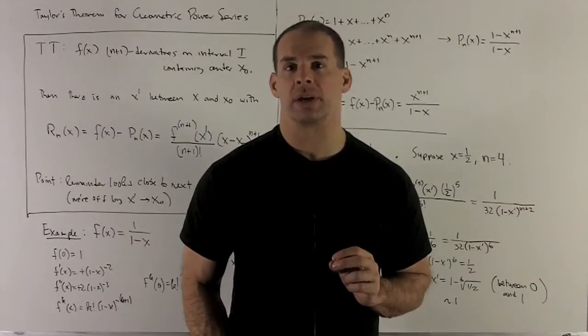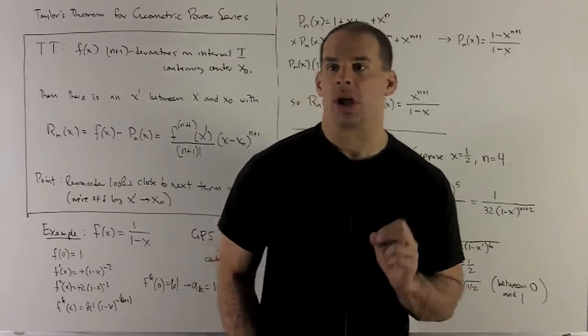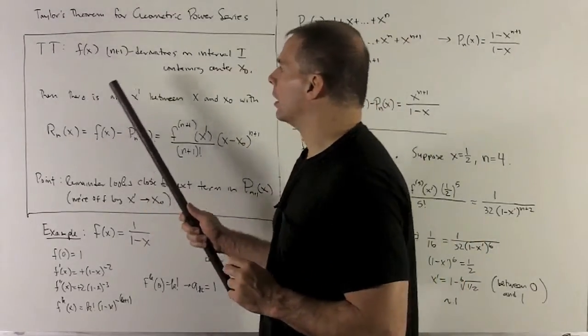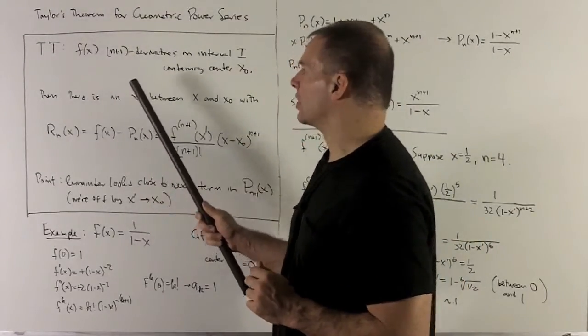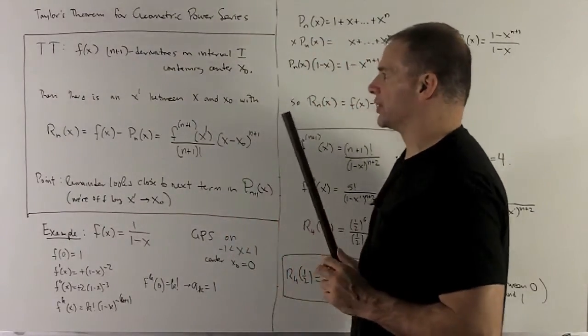For a concrete example of Taylor's Theorem, let's take a look at the geometric power series. Recall Taylor's Theorem says I'm going to have my function f of x, do n plus 1 derivatives on some interval i, and that's going to contain our center x0.